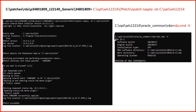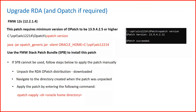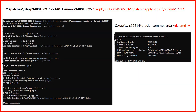After running the upgrade command, RDA will be upgraded to version 23.1. To upgrade OPatch itself, download the current OPatch from Oracle Support and run: java -jar opatch_generic.jar -silent oracle_home=<your_oracle_home_location>. Once both OPatch and RDA are upgraded, you are ready to execute RDA.